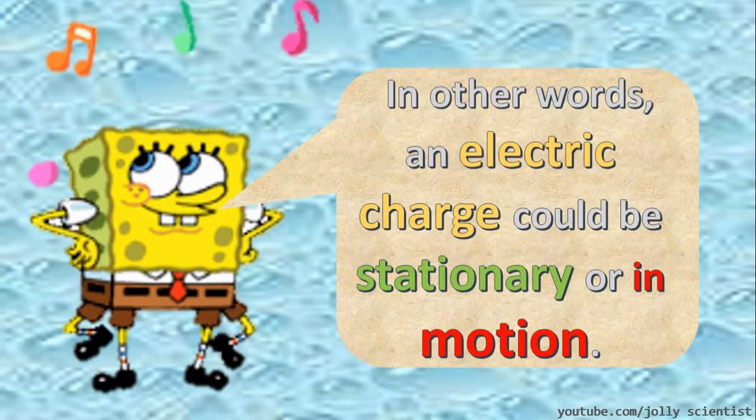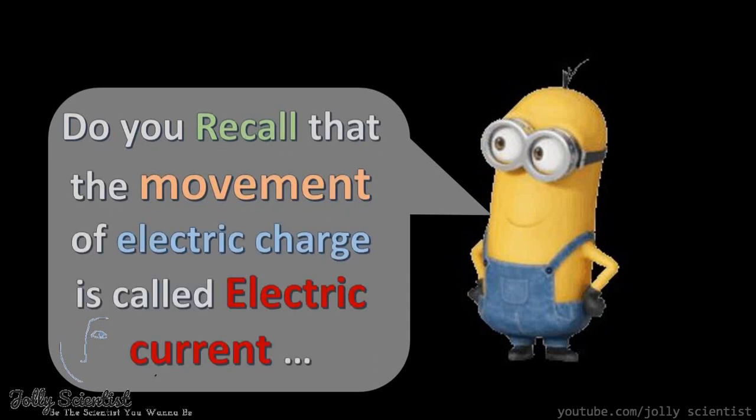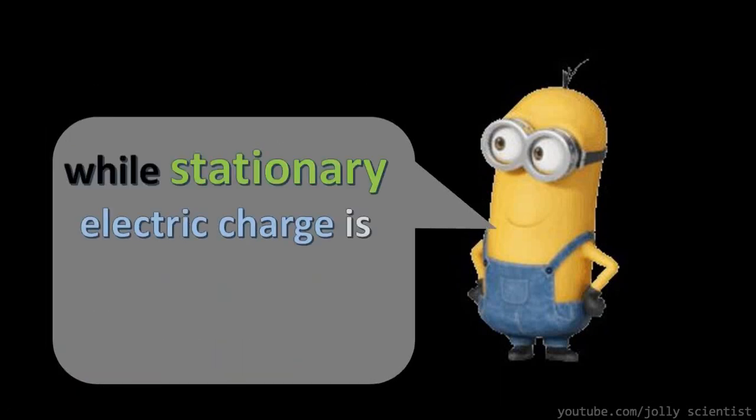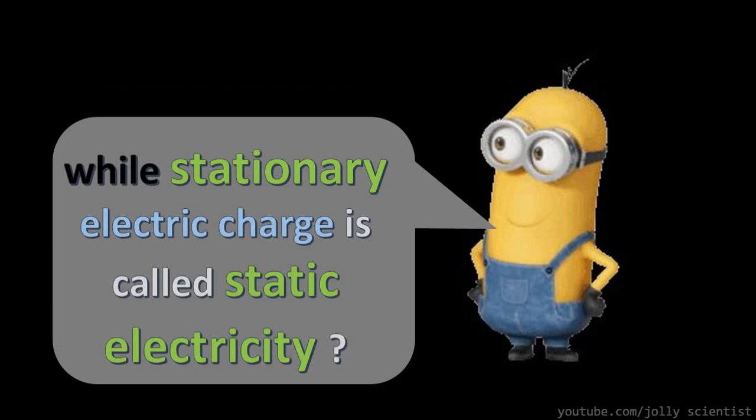In other words, an electric charge could be stationary or in motion. Recall that the movement of electric charge is called electric current, while stationary electric charge is called static electricity.